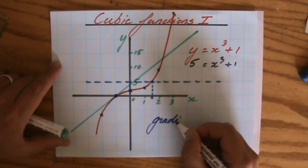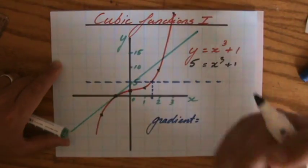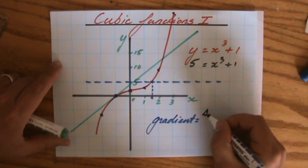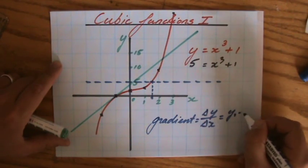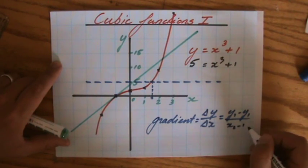The gradient of a line, which is rise over run, delta y over delta x. The difference in the y direction over the difference in the x direction.